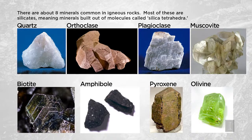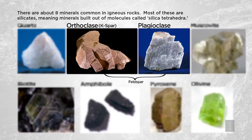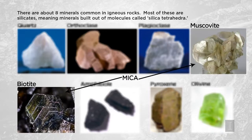In igneous rocks, it's typical to find the mineral quartz, the mineral orthoclase, the mineral plagioclase, the mineral muscovite, mineral biotite, amphibole, pyroxene, and olivine. These are some of the more common minerals that occur within igneous rocks. Two of them — orthoclase and plagioclase — are kinds of minerals called feldspars. Another two — biotite and muscovite — are a class of mineral called micas.